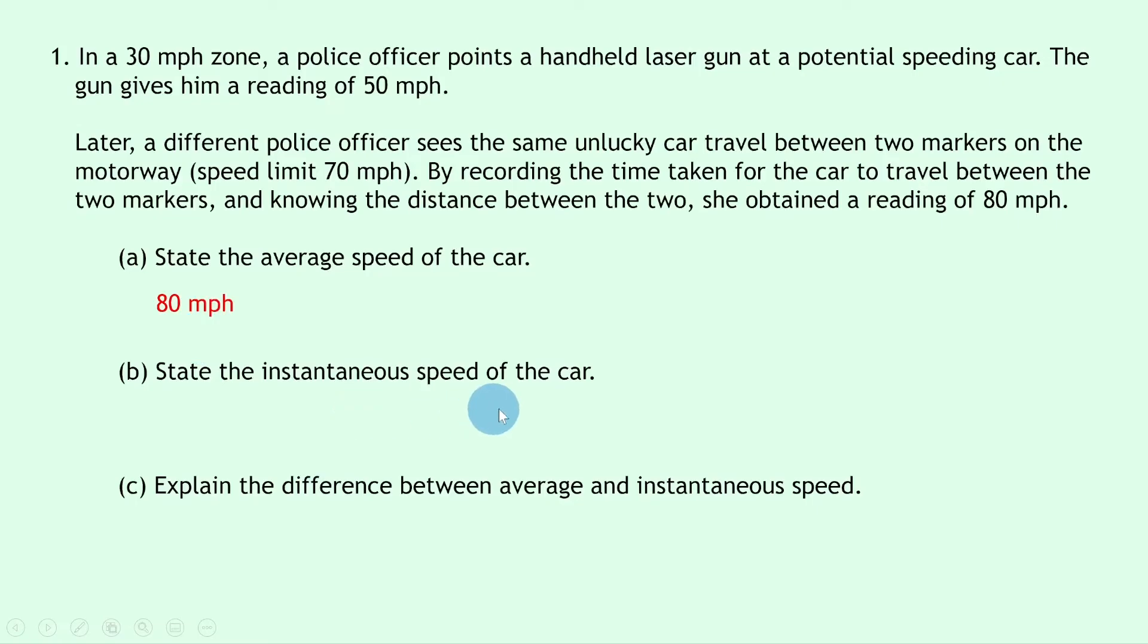Part B then says to state the instantaneous speed of the car. Well that must be the one mentioned in the first scenario which is found using the handheld laser gun. Because remember that is a way to find instantaneous speed of a moving object. So the instantaneous speed of the car at that point is 50mph.